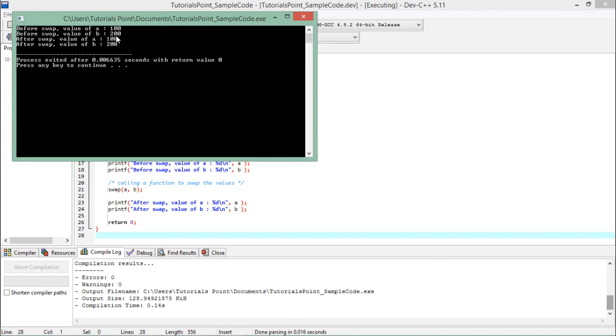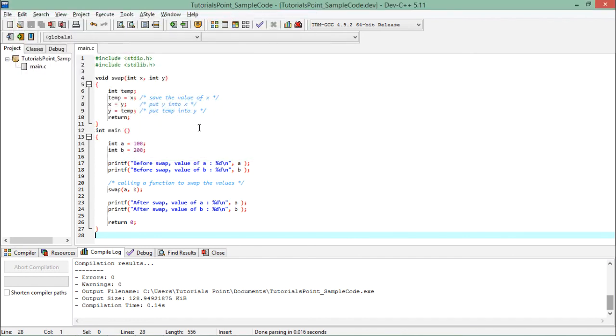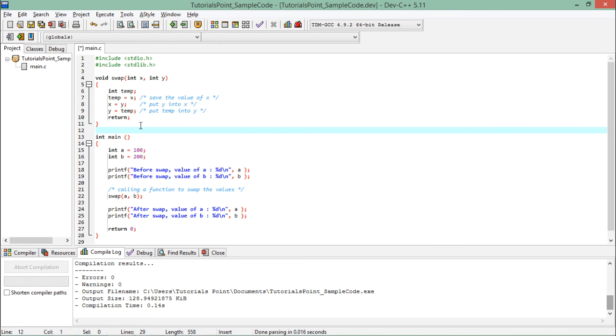Like initially, a was 100, b was 200, and even after swap, it is a 100 and b 200. So basically whenever you want to make a separate copy of values in the formal and actual parameters, you can go for the call by value as this is the default way to call any method by passing the parameters.